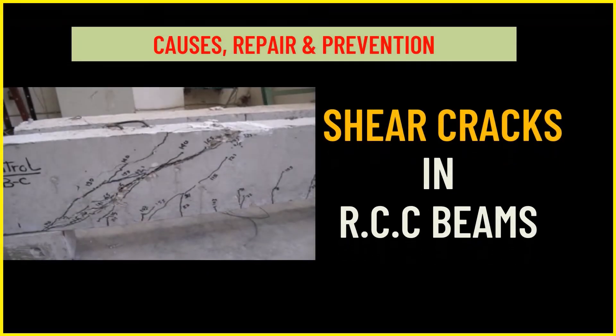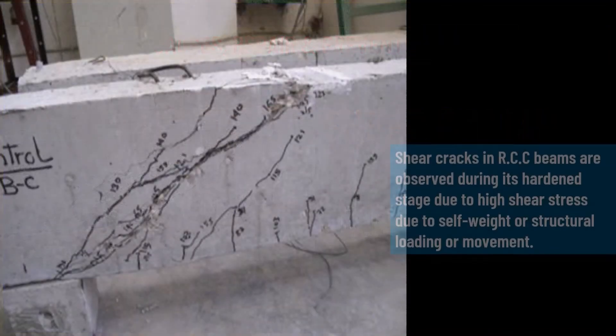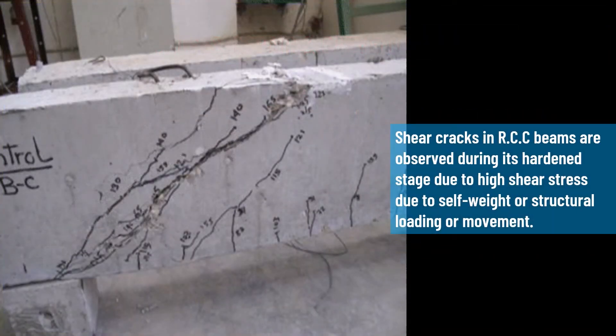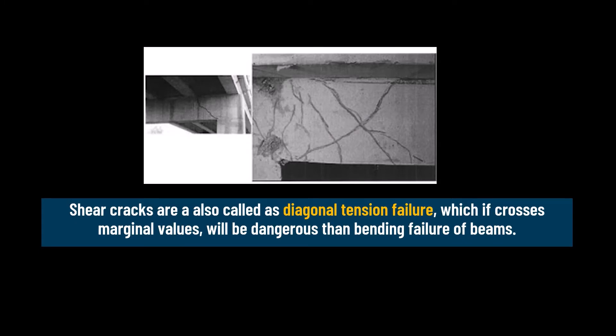Shear cracks in RCC beams are observed during their hardened stage due to high shear stress, caused by self-weight, structural loading, or moment. These are also called diagonal tension failures, which if they cross marginal values are more dangerous than the bending failure of beams.